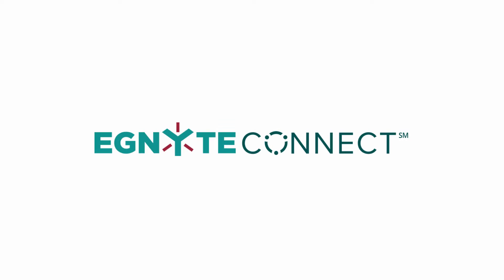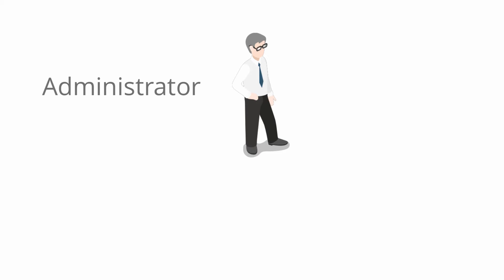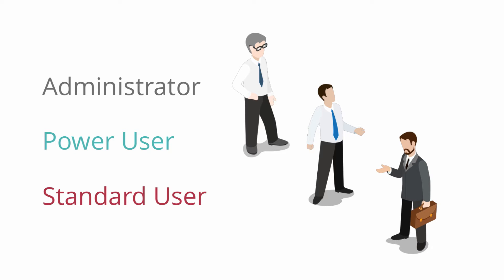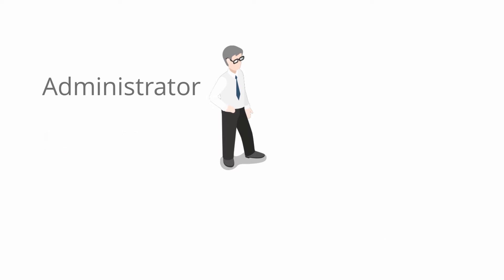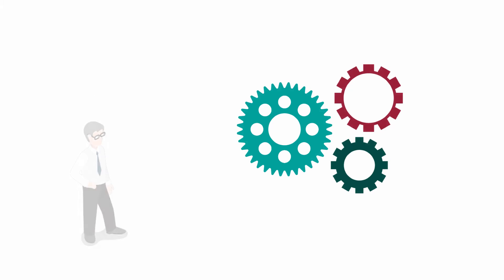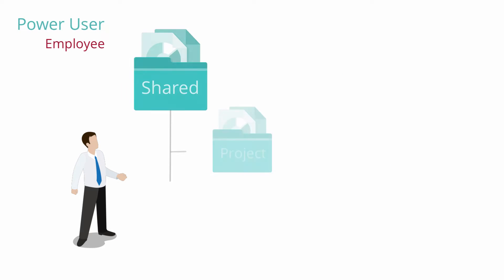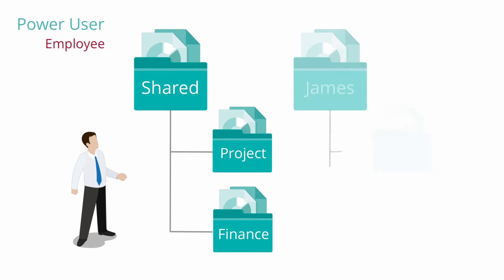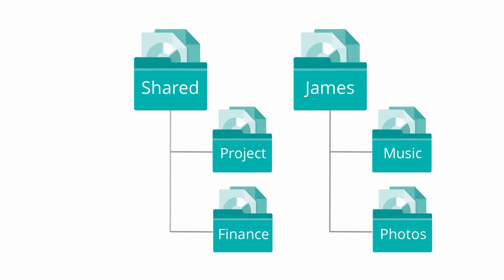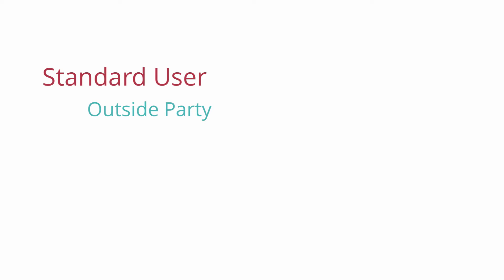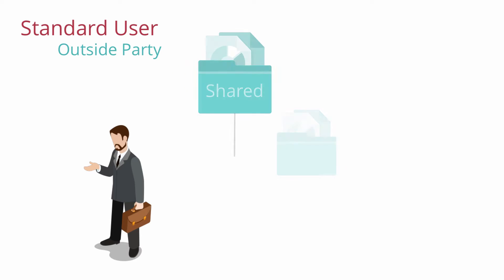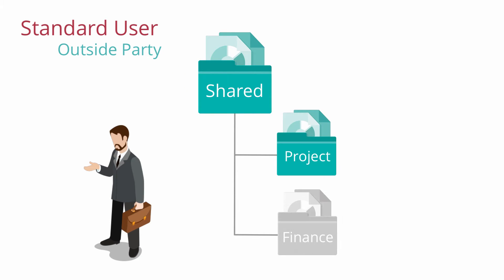With Ignite Connect, users are designated as either an administrator, a power user, or a standard user. Administrators are the people who manage the Ignite account and all its settings. A power user, like James, is a company employee who is granted access to shared folders for collaborating and a private folder just for them. A standard user is an outside collaborator, like Bruce, who is given access to certain shared folders within a company's domain. As easily as Bruce is granted access to a project folder on Ignite, that same access is just as easily removed when his work is complete.